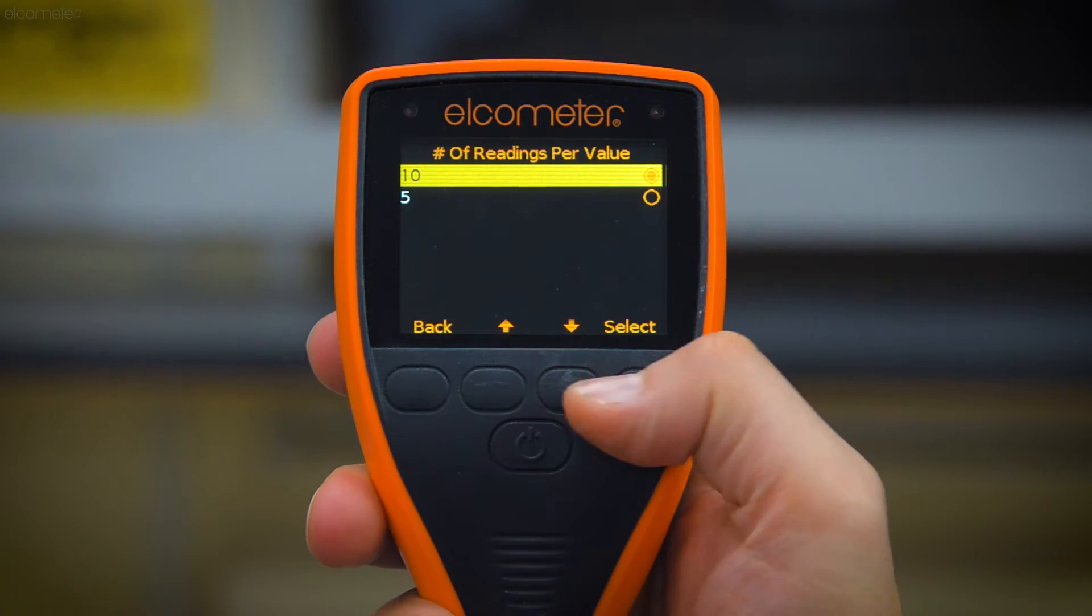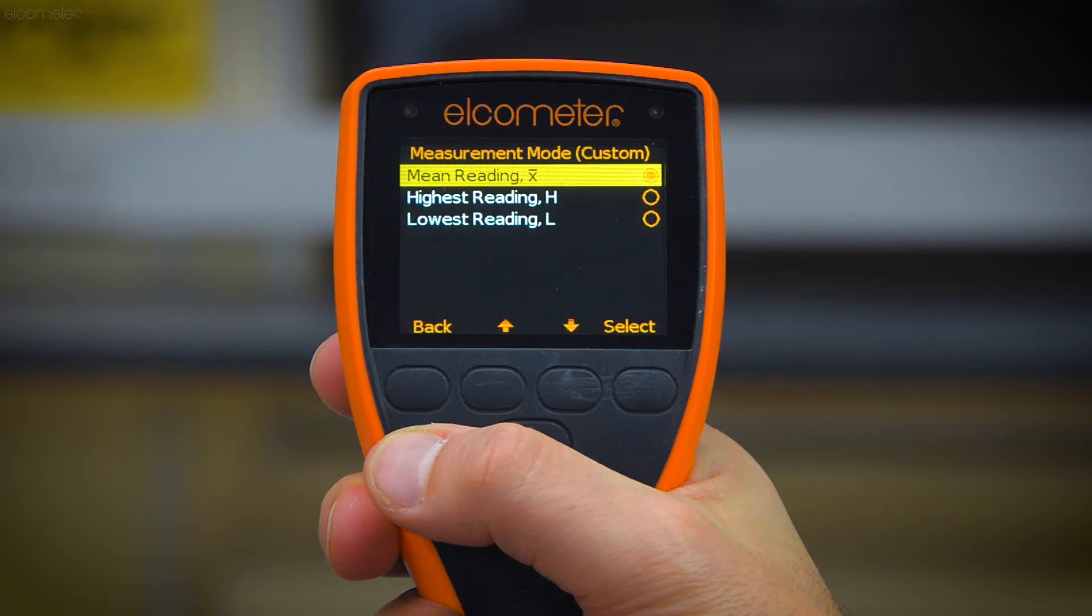The reading displayed is user selectable and can either be the more common average peak to valley height or the maximum height.